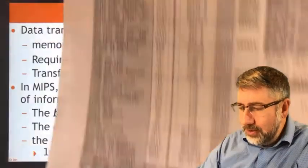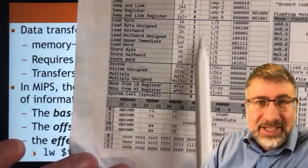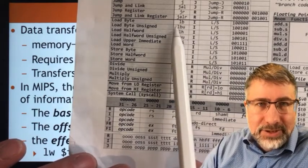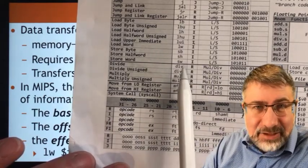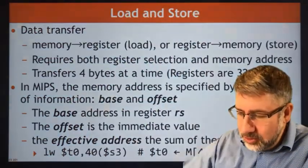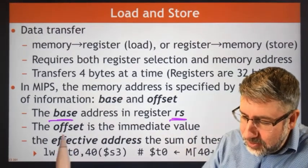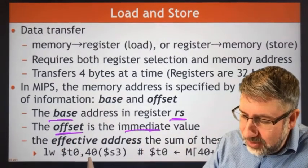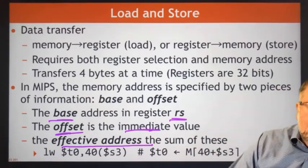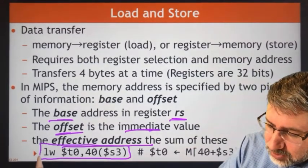This is why load and store operations are all I-format: the base is specified by a register, but the immediate value is used as an offset from that base. The base is stored in RS, the offset is stored in the immediate value, and the effective address is the sum of those two.